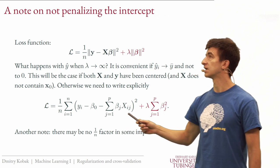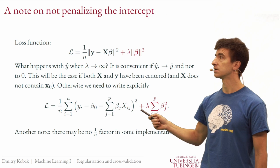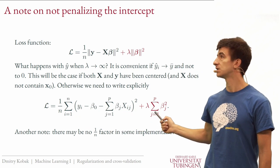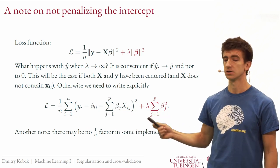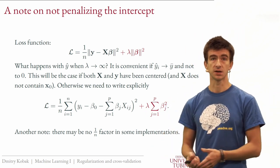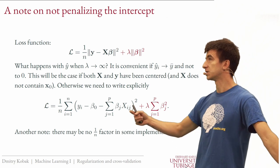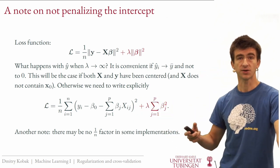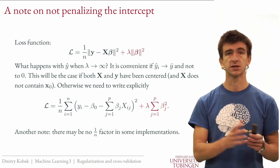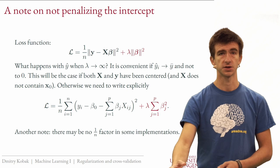If you compare different implementations across programming languages and libraries, you may notice small differences — for example, some implementations omit the 1/n term. This changes the scale of the optimal lambda but not the minimum of the loss or the resulting coefficients. So if you get a different lambda value in Python versus R, that's not necessarily a mistake — it can just be a scaling difference in the formulation.